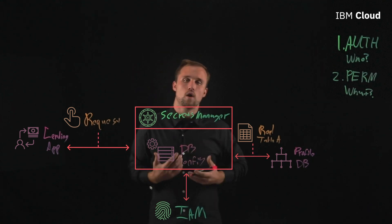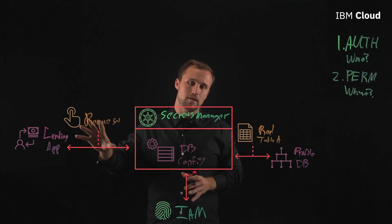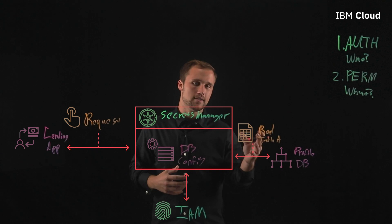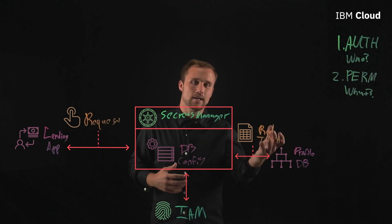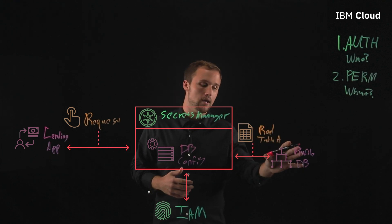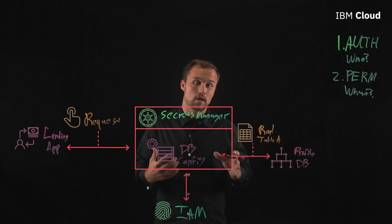So let's think about the scenario we just walked through. This dbconfig allows this lending application, a service, to be able to have read access or be able to take a specific set of information from a given table within a database that has some IP data and some other highly sensitive information in it.